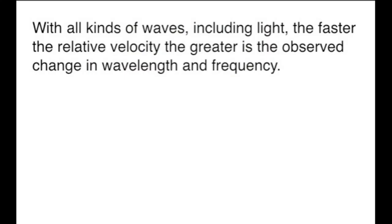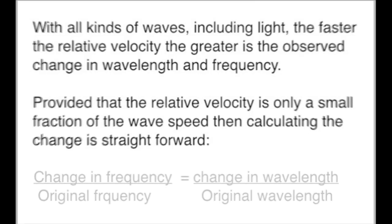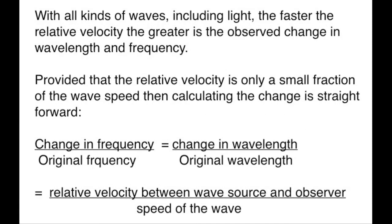Calculating the relative speed of the source of the waves and of the observer is reasonably straightforward, providing that this relative velocity is only a small proportion of the speed of the waves. The ratio of the change of frequency to the original, or the change of wavelength to the original, is exactly the same as the relative velocity between the source and the observer and the actual speed of the wave.